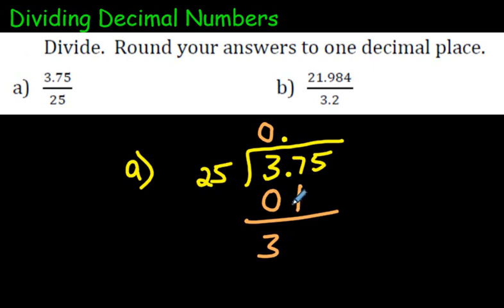And then we bring down the 7. 25 times what would be 37? Well, 25 times 1 is 25. 25 times 2 is 50. That's too big. So we'll just stick with the 1 there. 25 times 1 is 25.